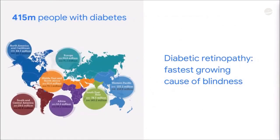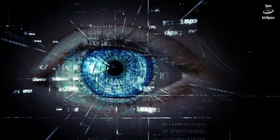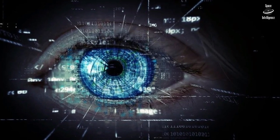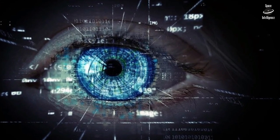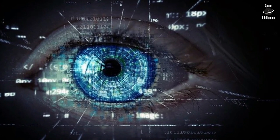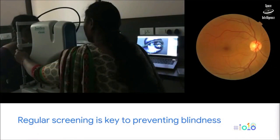One of the screening applications that our group has worked on is diabetic retinopathy — we call it DR, because it's easier to say — and it's the fastest growing cause of preventable blindness. All 450 million people with diabetes are at risk and need to be screened once a year. This is done by taking a picture of the back of the eye with a special camera.